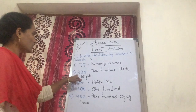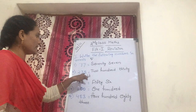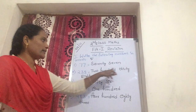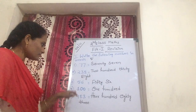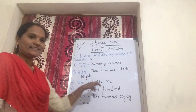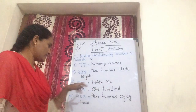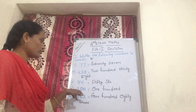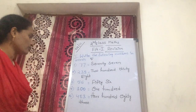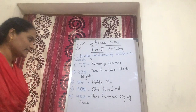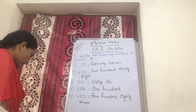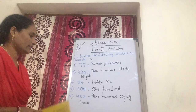Now second one: two hundred and thirty-eight. Now third one: fifty-six. Now fourth one: one hundred. Now fifth one: four hundred and eighty-three.